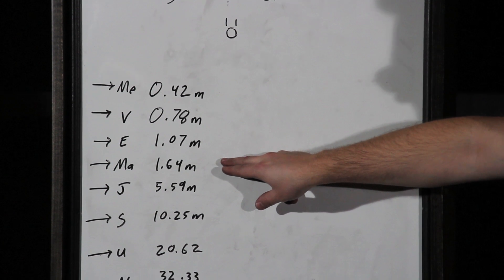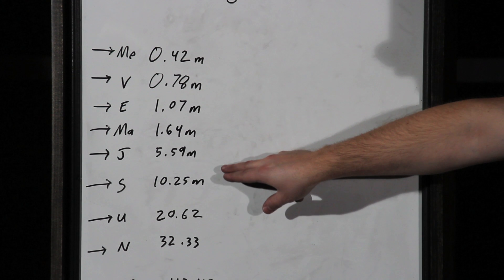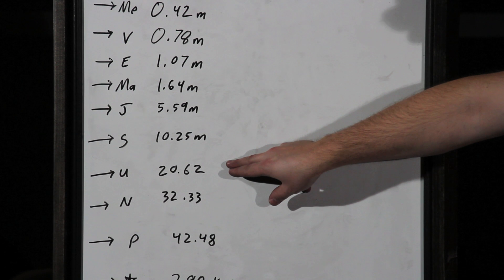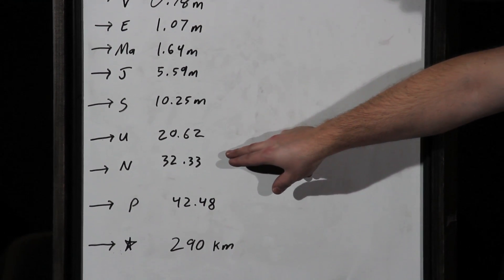Jupiter 5.5, and then we start really getting far away from the sun. Again, the sun's just your little pinky finger, but Saturn's 10.25 meters away. Uranus is about 20, and you start really getting far away at this point. Neptune's 32 meters away. You're really pretty far from the sun.